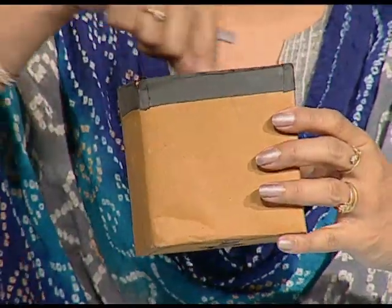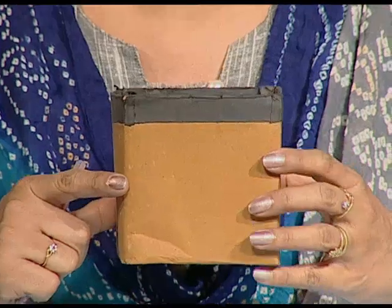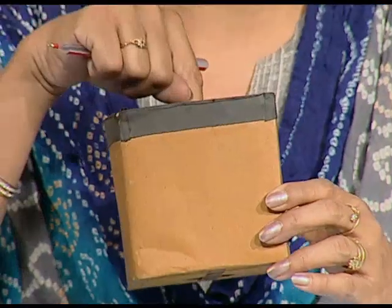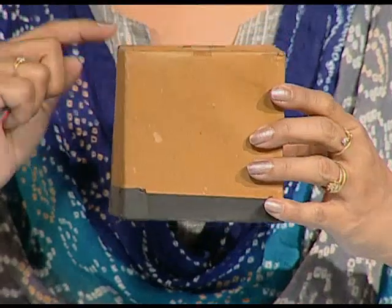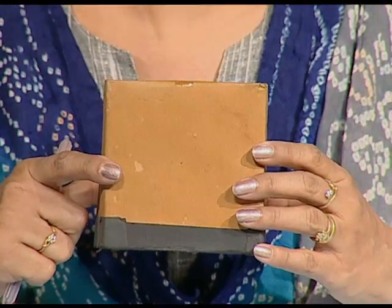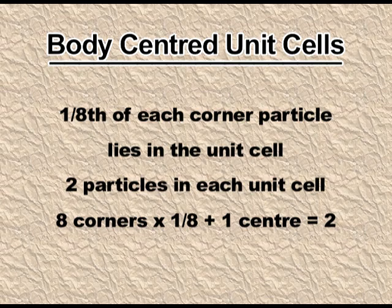In the body-centered unit cell, atoms are at the corners and there is one atom inside the body. The corner atoms contribute one-eighth each, but the atom inside the unit cell is not shared — it contributes wholly. So the total is: 8 corners × (1/8) = 1, plus 1 body atom = 2. The total number of atoms in a BCC unit cell is 2.